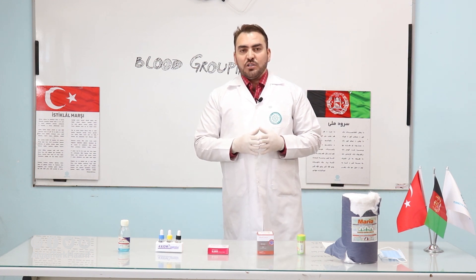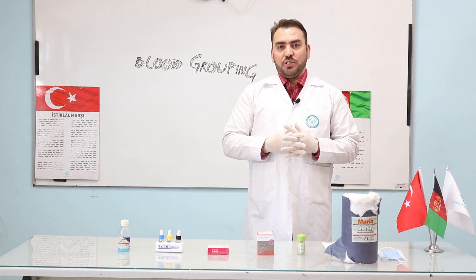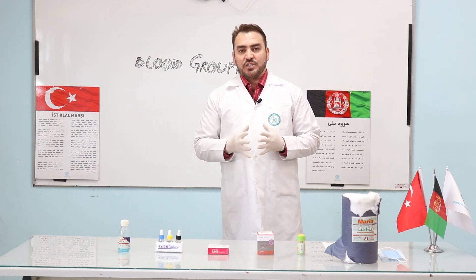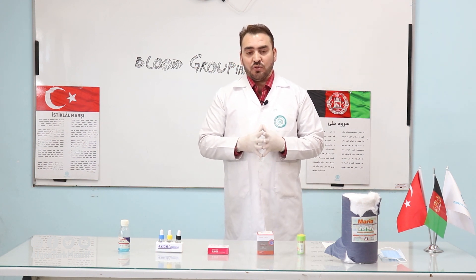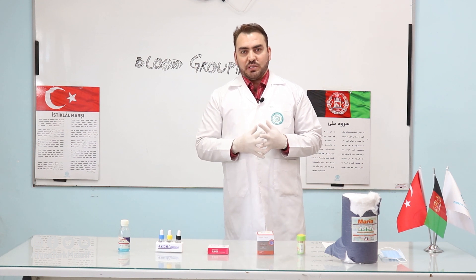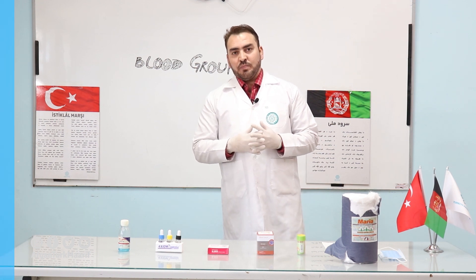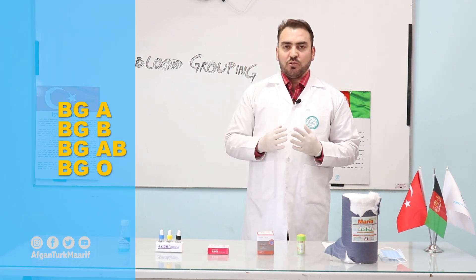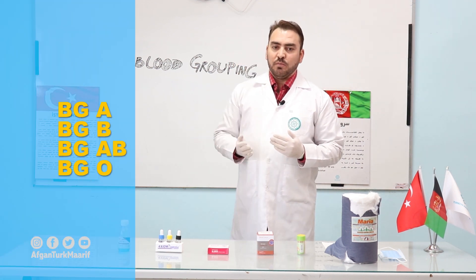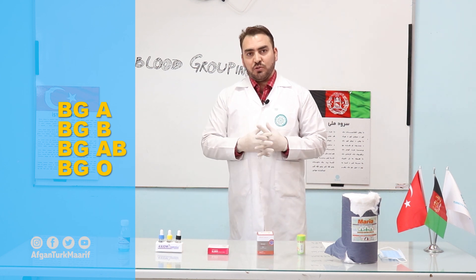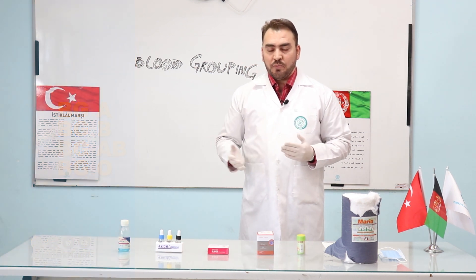According to the ABO system, which was first introduced by Karl Landsteiner in 1901, there are four types of blood groups: blood group A, blood group B, blood group AB, and blood group O.